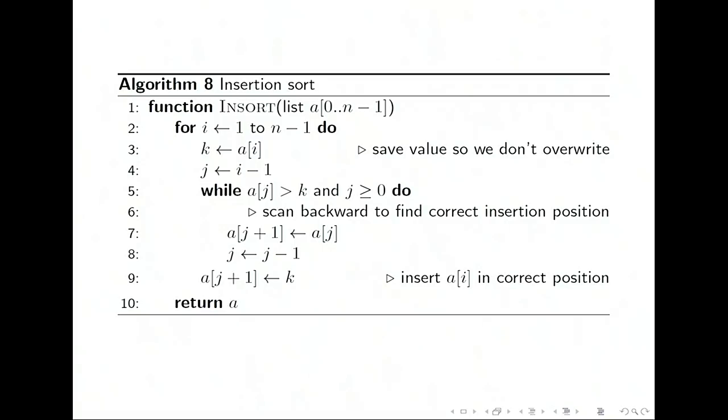So here's the pseudocode for insertion sort. We're going to loop through n minus one times, looking at line two there. We're going to start at the second element of the array. We save its value in line three so that we don't overwrite it. And then we scan backwards using the variable j to find the correct position to insert. We keep going until we find a place that we should stop because the element to the left is small relative to the element k. And then we just, in line nine, ensure that we insert our original element a of i in the correct position.